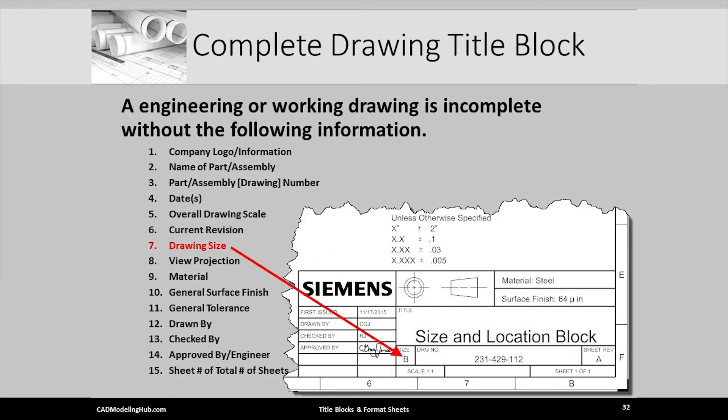Title blocks must indicate the size of paper that they are to be printed on. Our example here is to be printed on an 11 by 17 or B size sheet of paper.